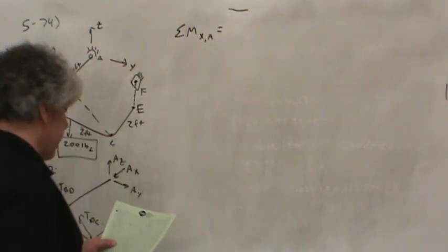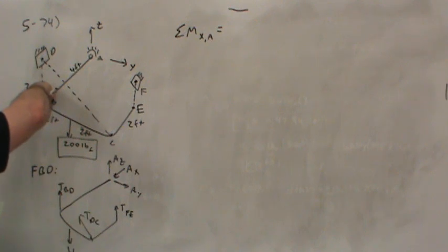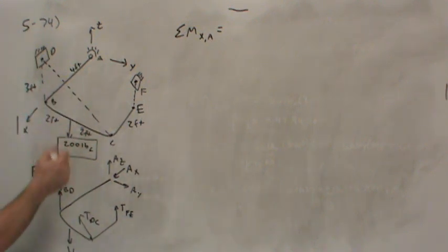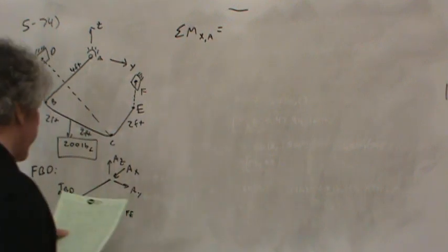So sum of moments in the X direction about A, so this direction, well let's see. Notice that BD passes through that line and so causes no moment about the X axis, but DC will certainly cause a moment, so will FE and so will the weight.